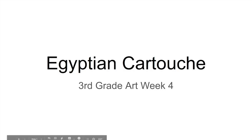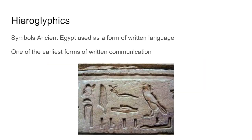We're going to be looking at the Egyptian cartouche this week in art. Of course we need to know what hieroglyphics are. Hieroglyphics are the symbols ancient Egypt used as a form of written language — one of the earliest forms of written language there are, and there they are carved into stone. They are very pictorial and one of the very earliest forms of written communication.